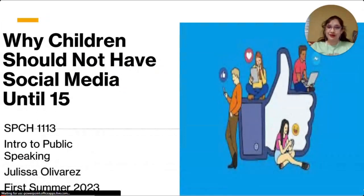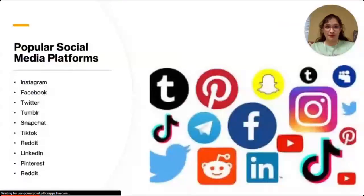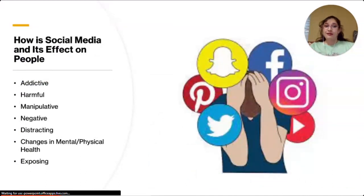Good afternoon. My name is Julissa Olivares, and today I am going to be going over why children should not have social media until 15, for SPCH 1113, Intro to Public Speaking, first summer of 2023. Social media is websites and applications that enable users to create, share, and exchange information and ideas in virtual communities. Some popular social media platforms are Instagram, Facebook, Twitter, Tumblr, Snapchat, TikTok, Reddit, LinkedIn, and Pinterest. Some effects that social media has on people is that it is addictive, harmful, very manipulative, negative, and distracting, with changes in mental and physical health.